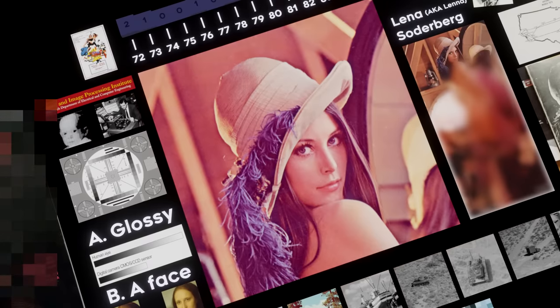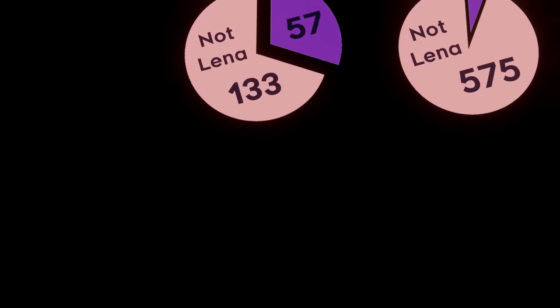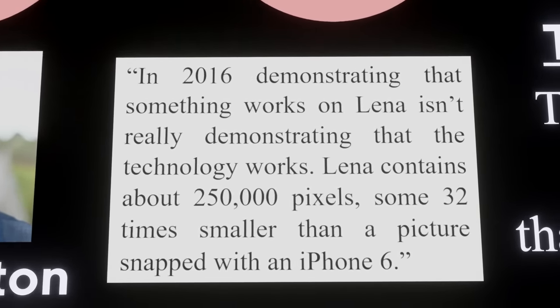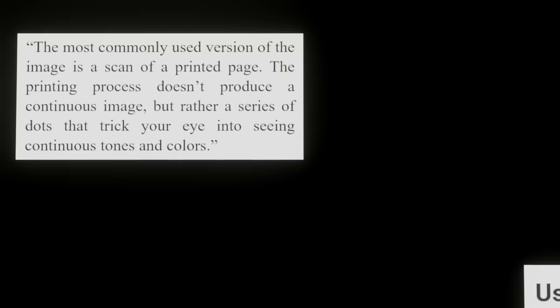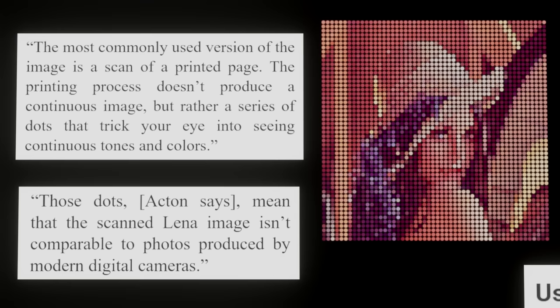In the years since Munson's editorial, several past editors for the journal have expressed renewed interest in retiring the Lena image. Here's a quote from Scott Acton in 2016: demonstrating that something works on Lena isn't really demonstrating that the technology works. Lena contains 250,000 pixels — some 32 times smaller than a picture snapped with an iPhone 6. And then there's a quality problem: the most commonly used version of the image is a scan of a printed page. The printing process doesn't produce a continuous image but rather a series of dots that trick your eyes into seeing continuous tones and colors.